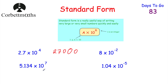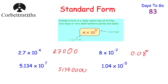Next, 5.134 × 10⁷: move the digits 7 columns to the left. First move 3 columns to get 5,134, then add 4 more zeros to get 51,340,000. For small numbers: 8 × 10^(-2) — put two zeros in front: 0.08. And 1.04 × 10^(-5) — put five zeros in front, giving 0.0000104.